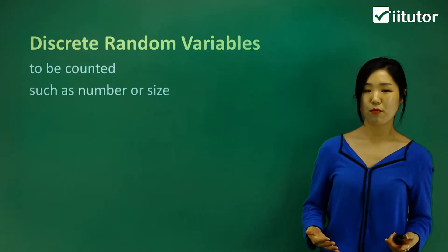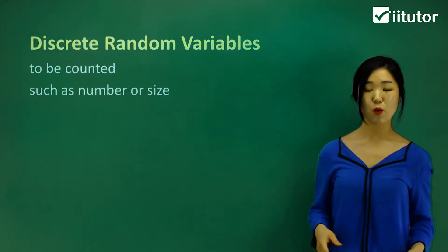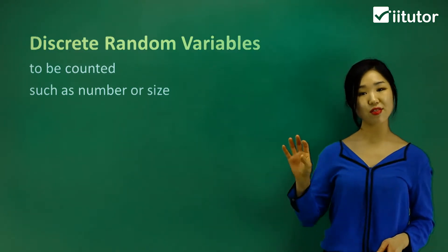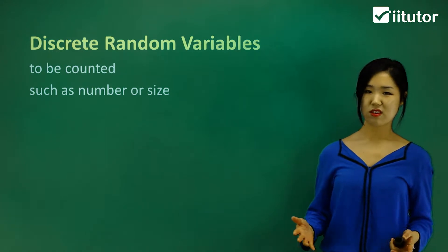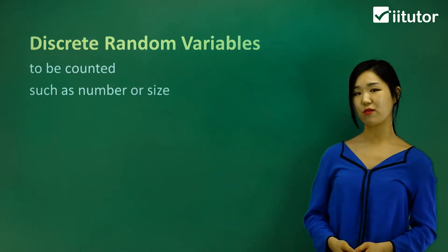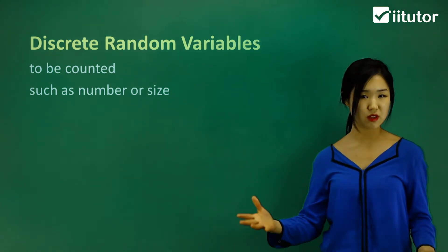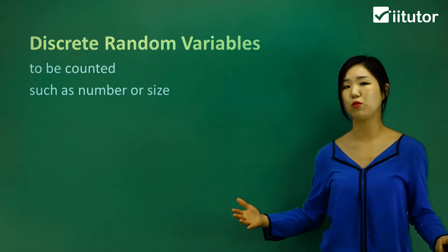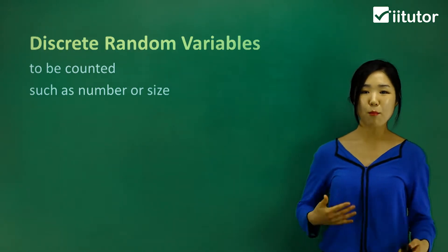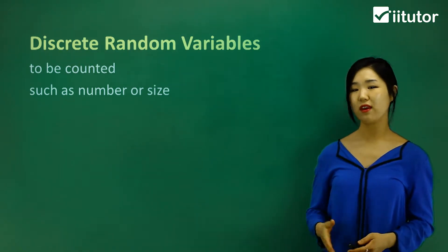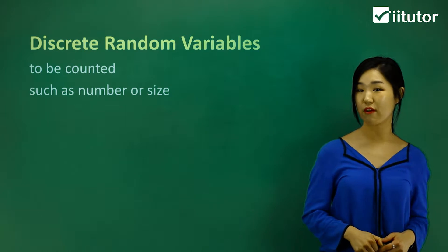For example, the number of girls in a class — we can easily count them. We can't have 6.05 number of girls. It has to be either six people, seven people, eight people, or twenty people. So the number of something is part of a discrete random variable.